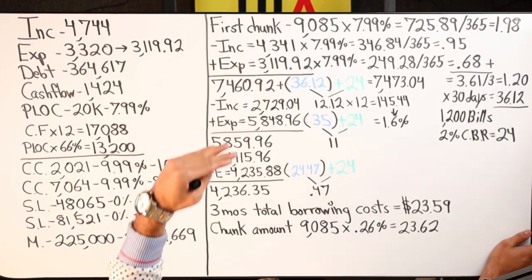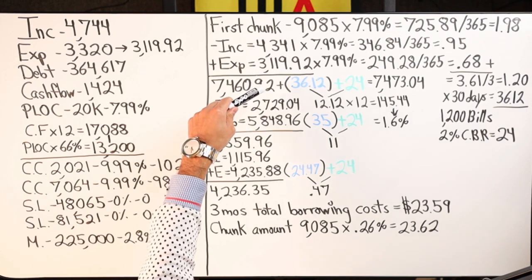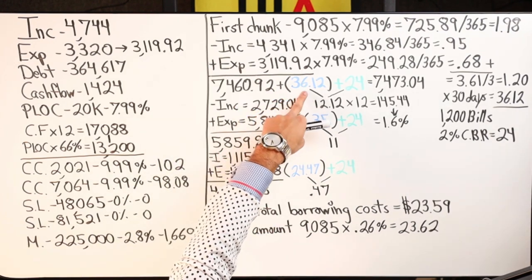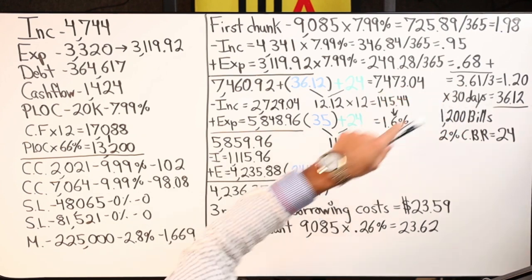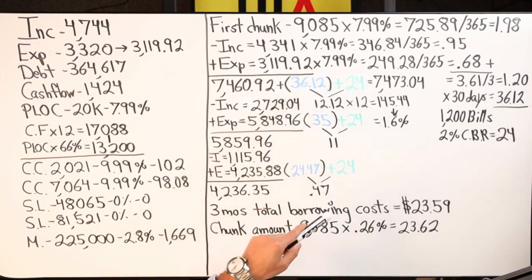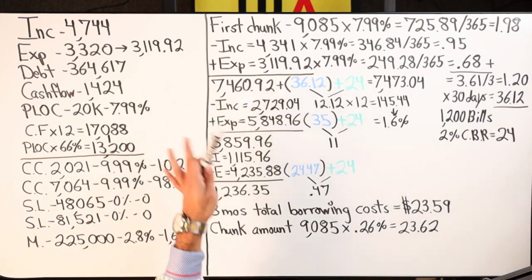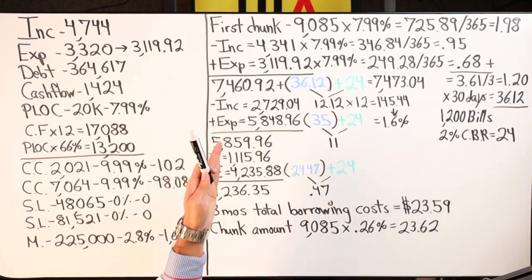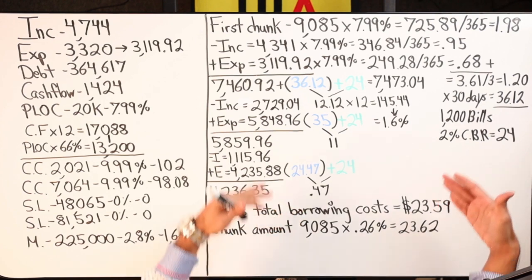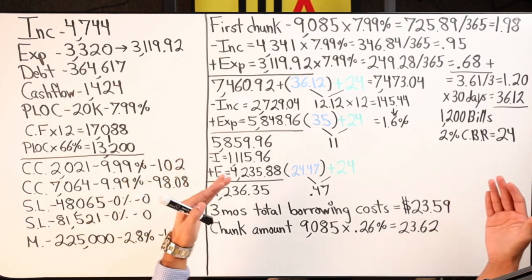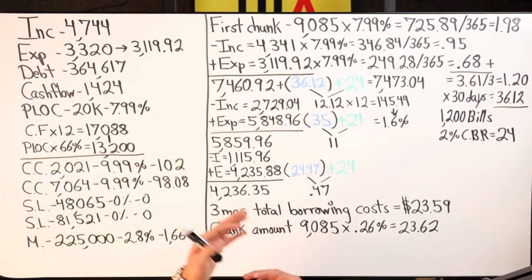Income goes in, then expenses come out — now less by one hundred two and ninety-eight dollars eight cents, so expenses are three thousand one hundred nineteen dollars ninety-two cents. Expenses come out of the line of credit, bringing the balance back up. Times by seven point nine nine gives you two hundred forty-nine dollars; divide by three hundred sixty-five — sixty-eight cents a day. At the end of the month the balance should be around seven thousand four hundred sixty dollars ninety-two cents.